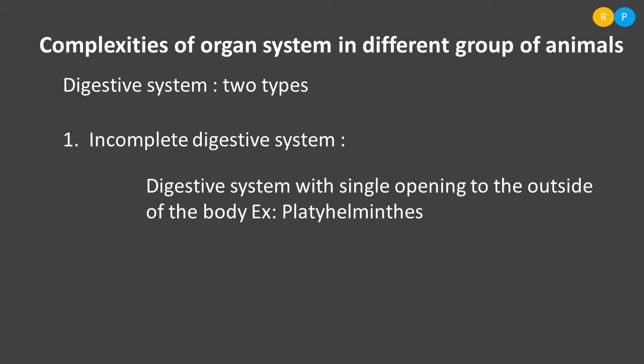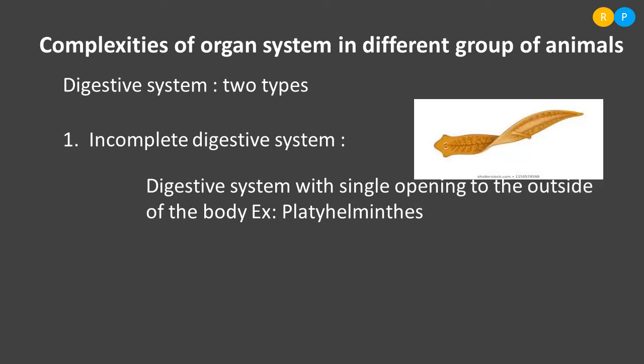The incomplete digestive system can be seen in some primitive invertebrate animals. The best example is Platyhelminthes, known as flatworms. One example is Planaria. In this animal, you can notice in the infolded region a small tube-like structure — that is the mouth. That single opening is connected with the digestive system, and both intake and removal of undigested solid waste are performed by the same opening. Because of this, it is called an incomplete digestive system.